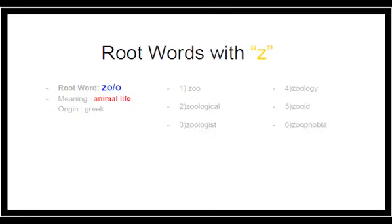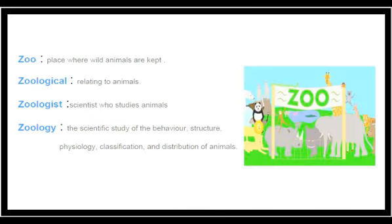We will see the meanings of each word. Zoo, as we know, in our childhood we all loved to go to the zoo — it is a place where wild animals are kept. The next word with this root is 'zoological', which means related to animals.